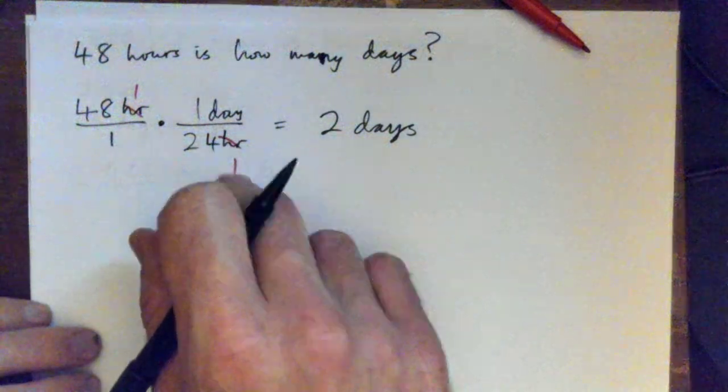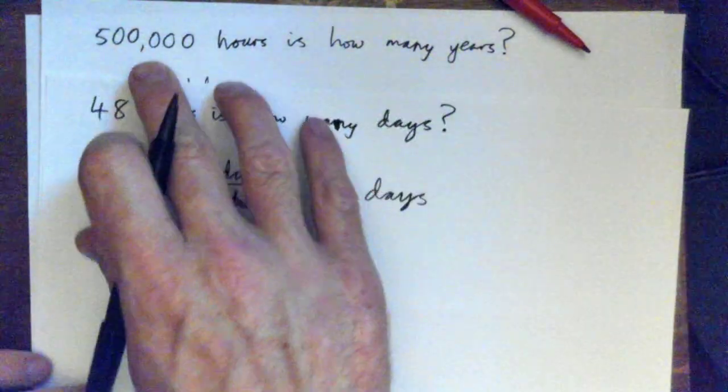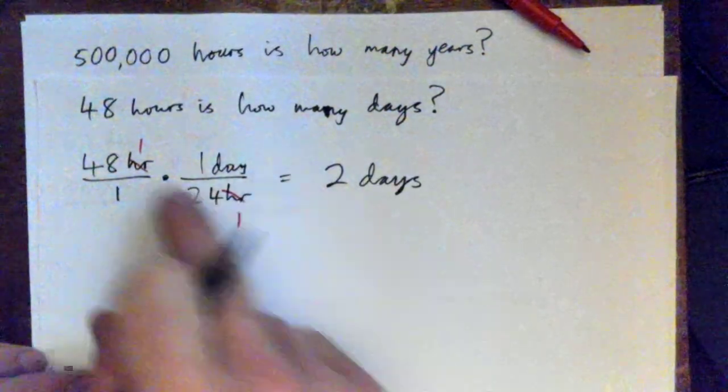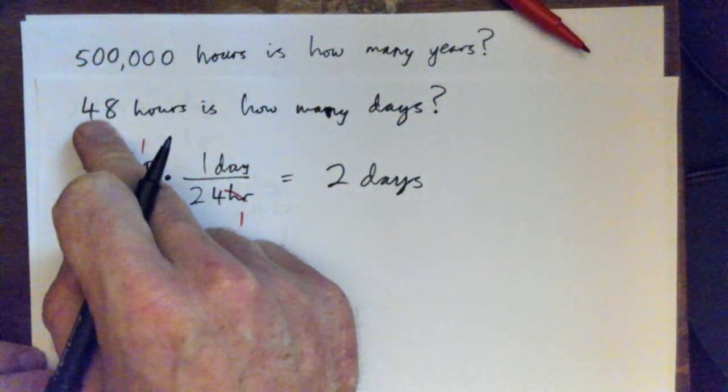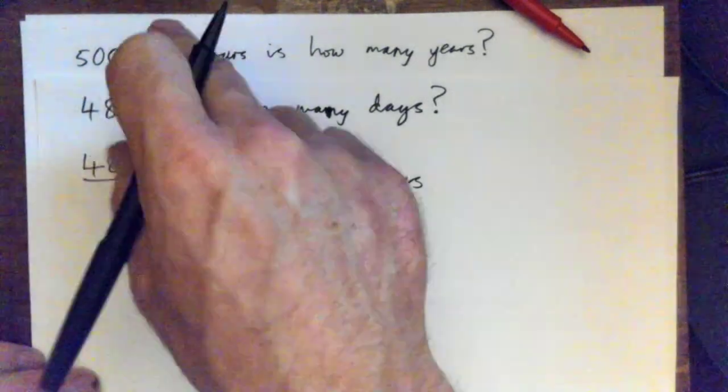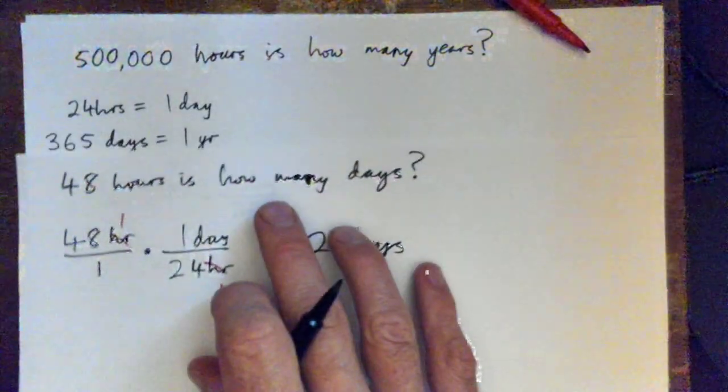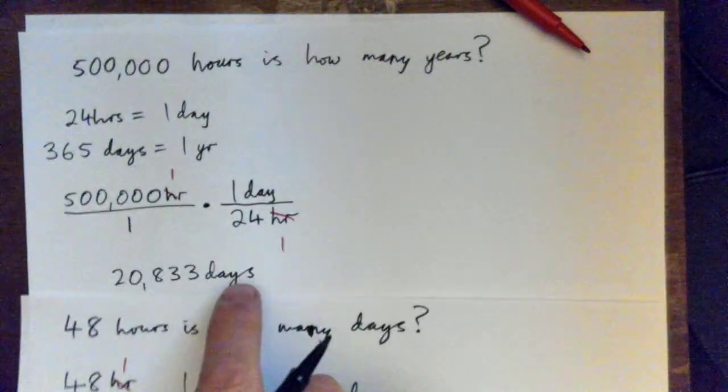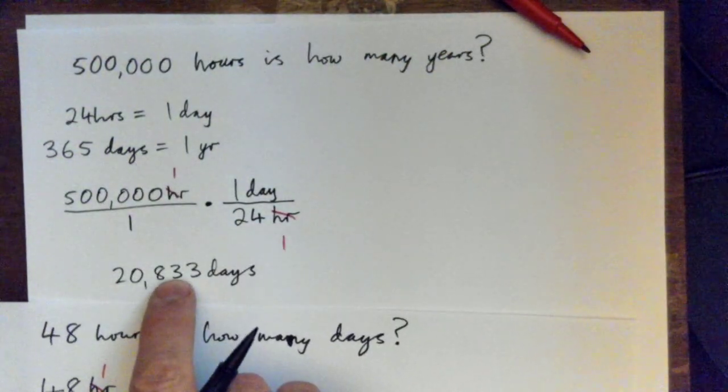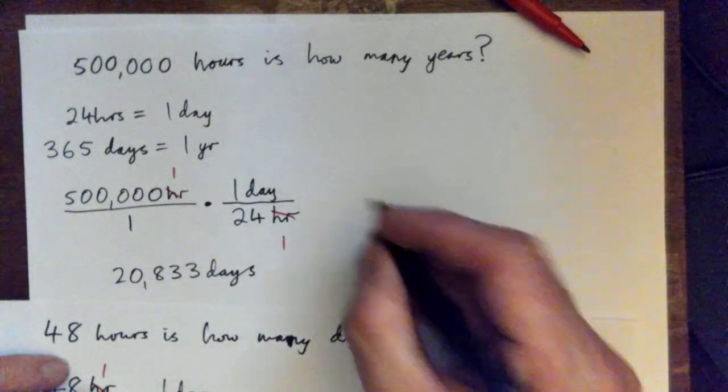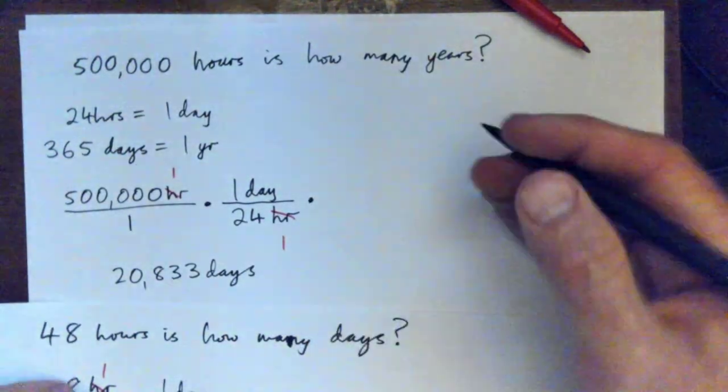So one trick, if you're confused, just make up an easy number and convert that, and then see if it makes sense. Because in this case we took 500,000 and we divided that by 24, and we got 20,833 days, right? Alright, so we've got to move it to years though.